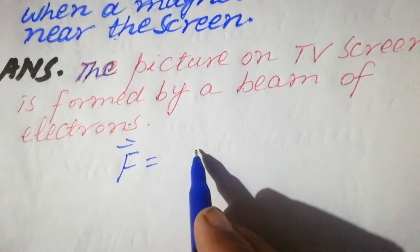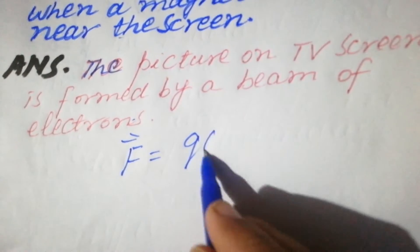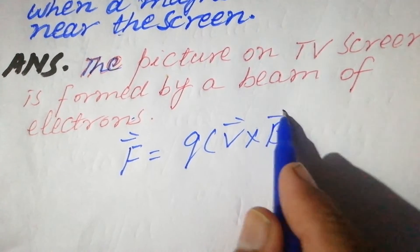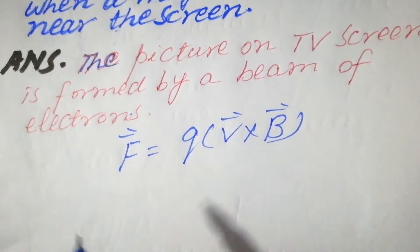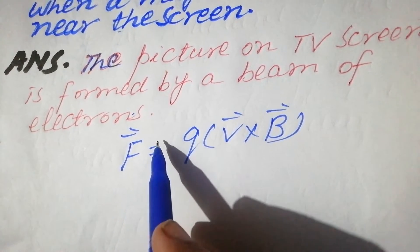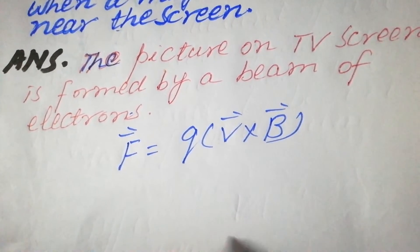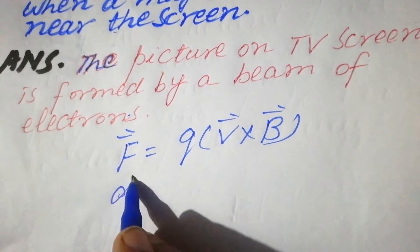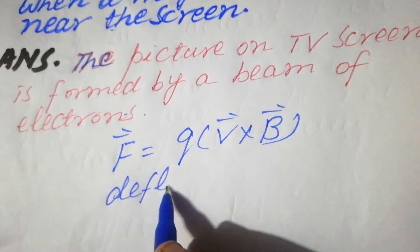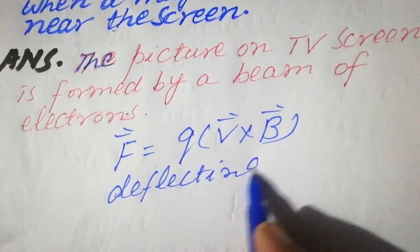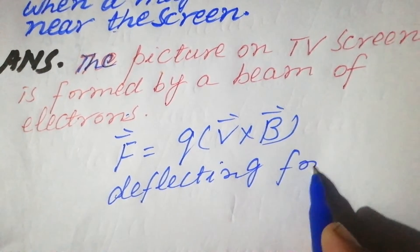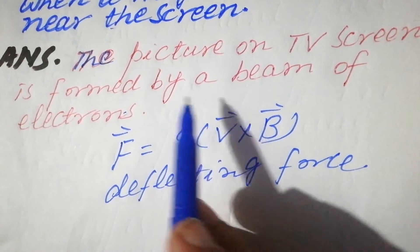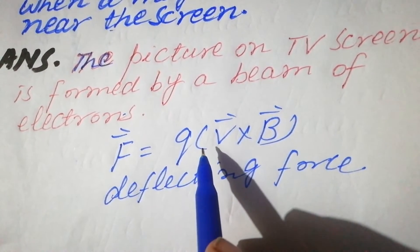When a magnet is brought near the screen, the magnetic force will act on these electrons, and its value is given by F = qv × B. We know the magnetic force is not an accelerating force — it is a deflecting force.